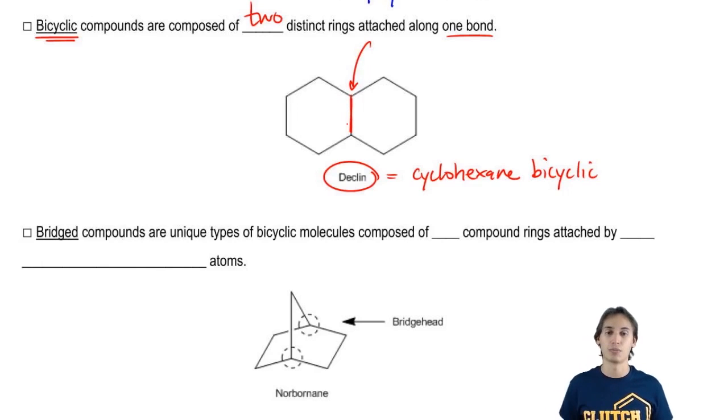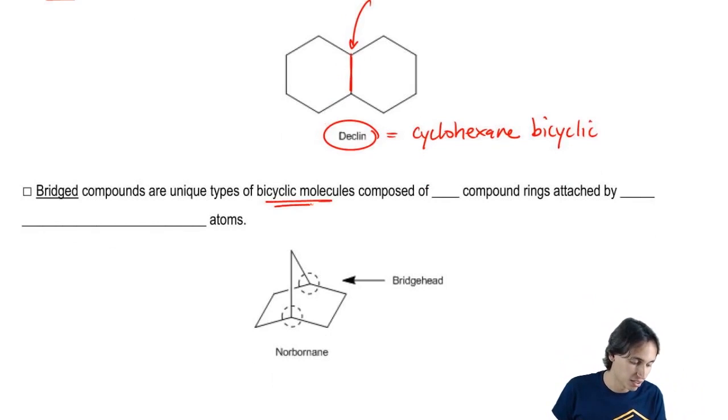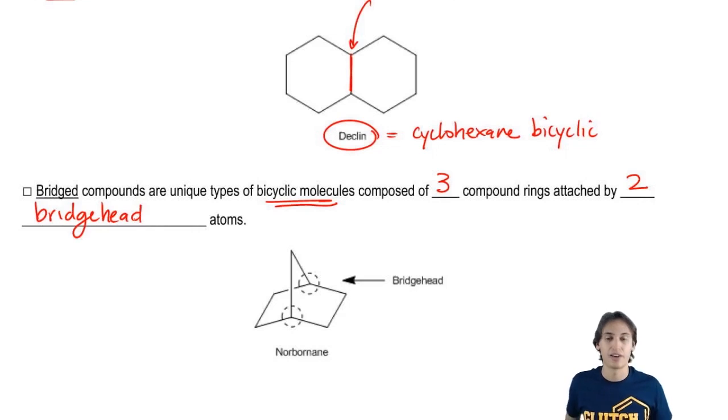So that would be a bicyclic molecule. Now a bridged compound is a type of bicyclic and it's actually composed of three compound rings attached by what we call two bridgehead atoms.